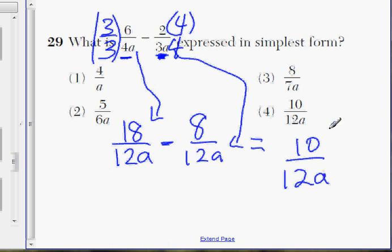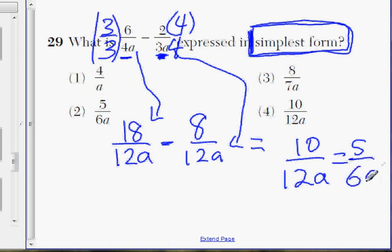Now this looks like choice 4. That's actually not the answer because the answer is asking for the simplest form. So if you can, you've got to reduce this to the simplest form. Well, 10 divided by 12 is the same as 5 over 6. So the answer is 5 over 6a, choice 2.